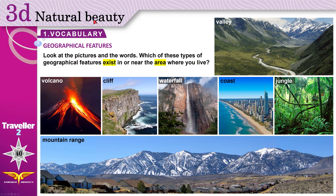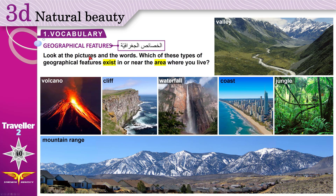3D natural beauty — natural, not man-made, not artificial. The beauty you see in nature. One vocabulary: geographical features. The word geography — what we mean by this: naturally created features on the earth. Who created these features? They were naturally created. Look at the pictures and the words. Which of these types of geographical features exist — can be found in or near the area where you live? Let's take a closer look at these features.